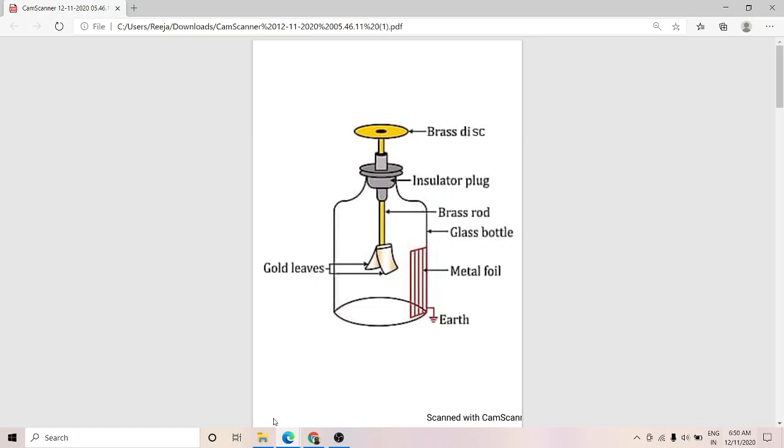Now how were these cosmic rays discovered? C.T.R. Wilson in England and Elser and Gaetel in Germany observed that if a properly insulated and charged gold leaf electroscope is left to itself, the charge on the gold leaves leak gradually and the electroscope is ultimately discharged.